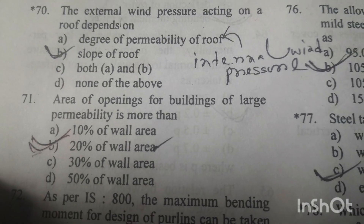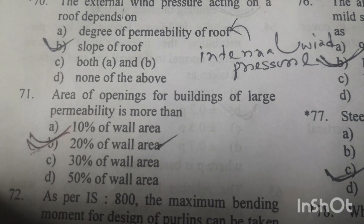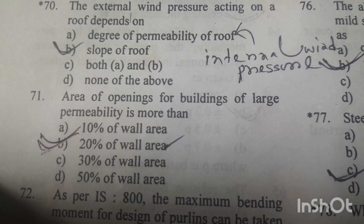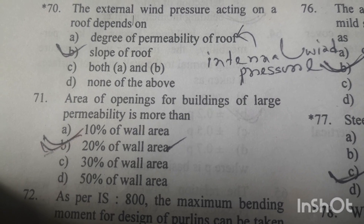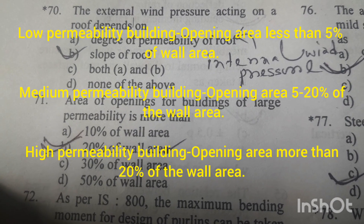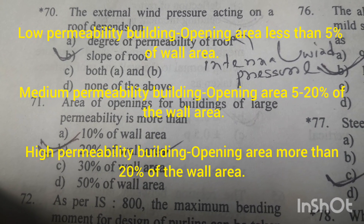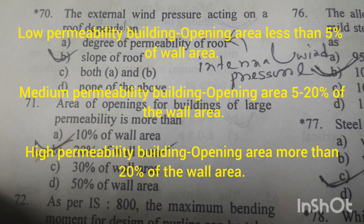Question number 71: Area of opening for a building of large permeability is more than 20% of the wall area. Option B is the right answer.